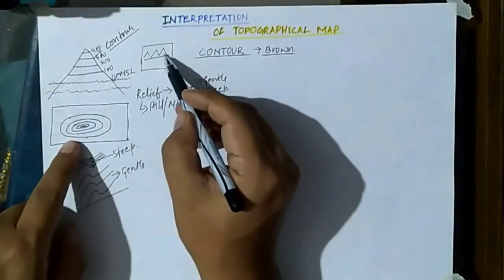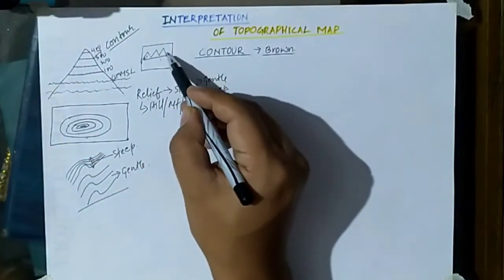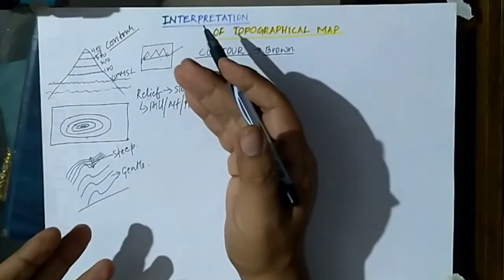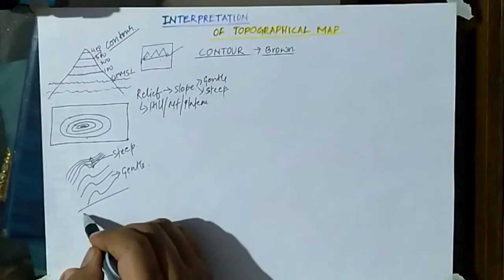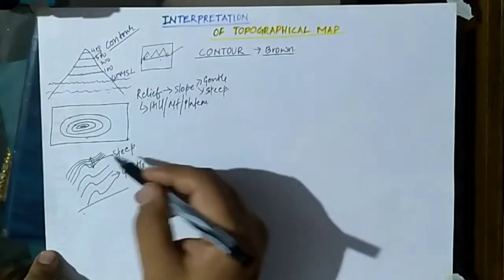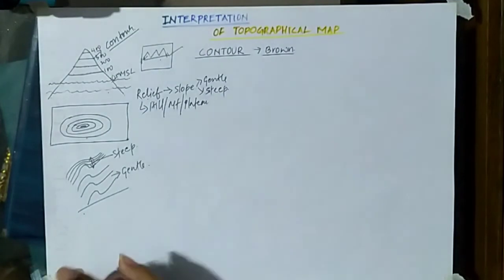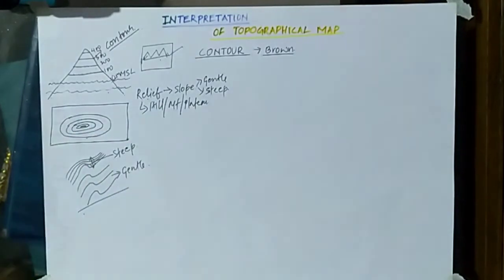If you draw mountains or hills on the map in a pictorial way, it will not be a map — it will be a sketch. That is why contours help us represent mountains and elevated surfaces properly on the map.